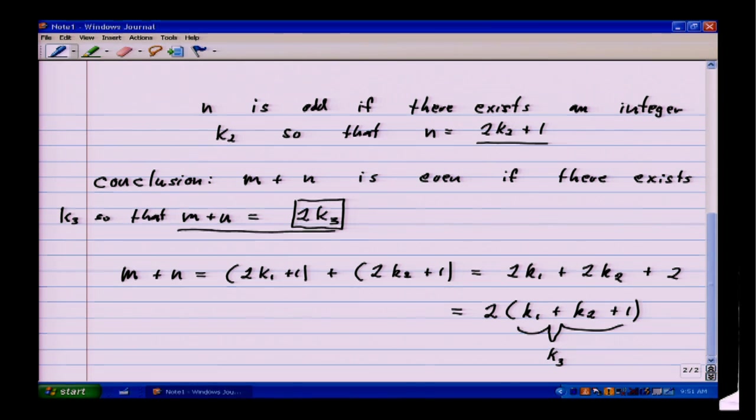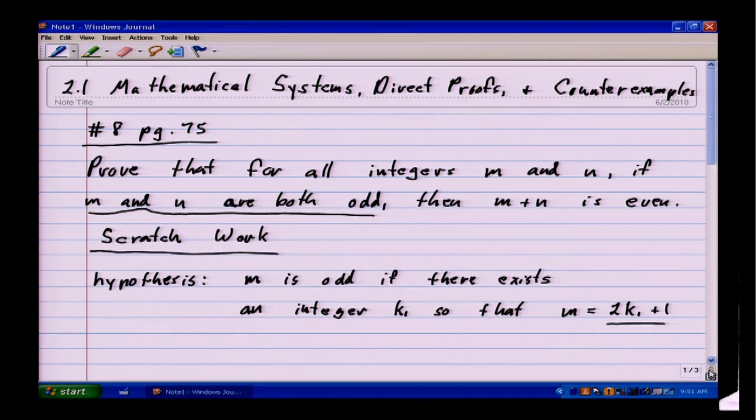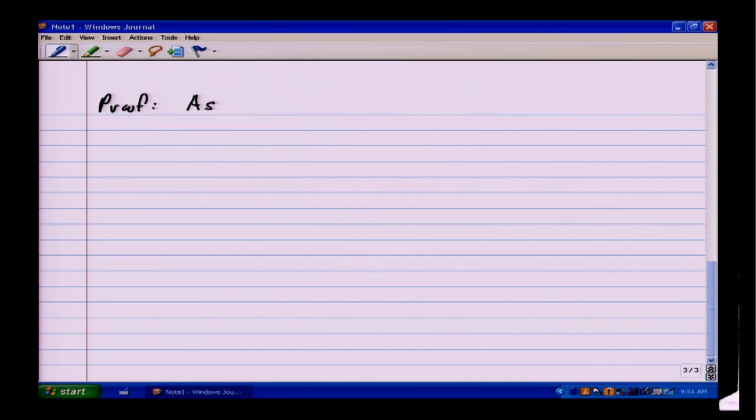Okay, so that was a little bit messy. Let's now actually write the proof based on what we just kind of scratched out. In a direct proof, we start by assuming that the hypothesis is true. So we assume that m and n are both odd integers.